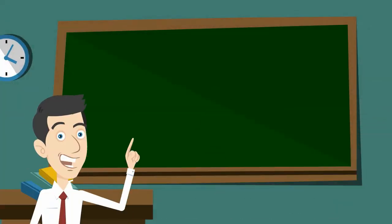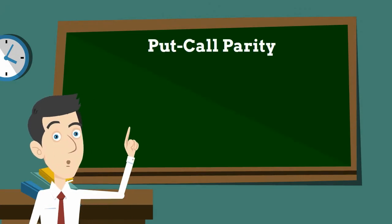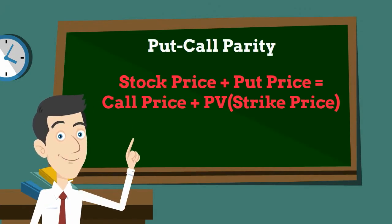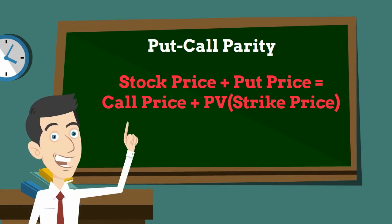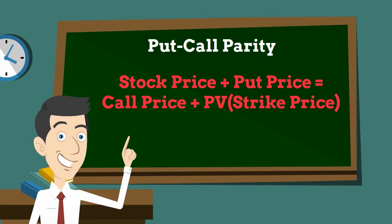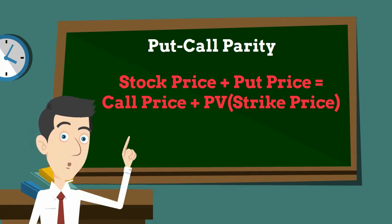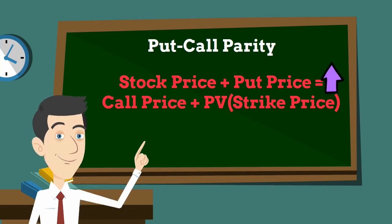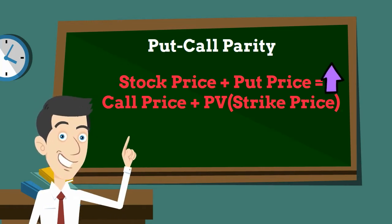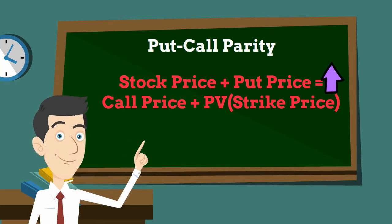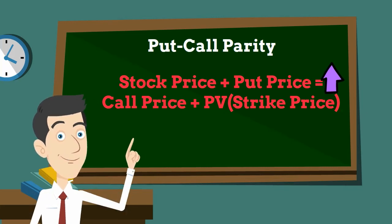First of all, let's look at the formula itself. It states that the sum of the stock price and the put option will be equal to the sum of the call option and the present value of the strike price. The basic idea is: if the strike price is higher, it is more likely that the call cannot be exercised, so the call would be cheaper and the put would be more expensive.